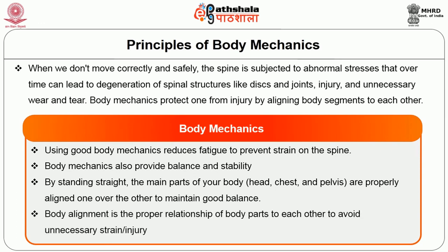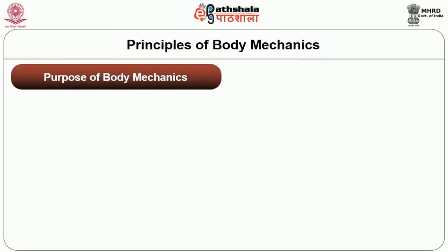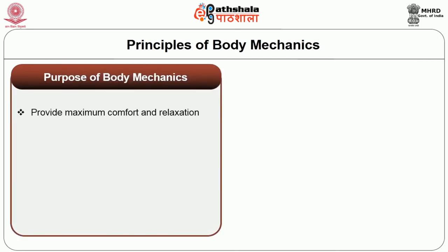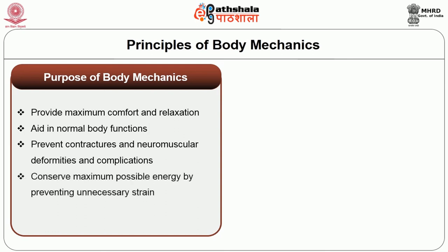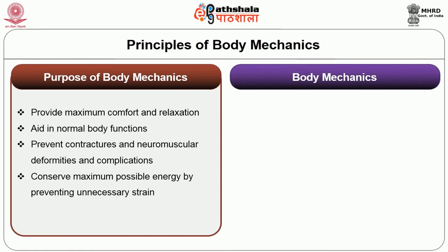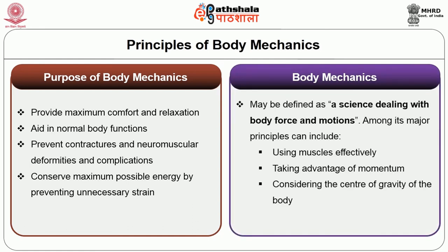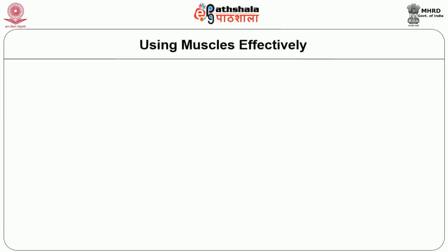Body alignment is the proper relationship of body parts to each other to avoid unnecessary strain or injury. The main purpose of body mechanics is to provide maximum comfort and relaxation, aid in normal body function, prevent neuromuscular deformities and complications, and conserve maximum possible energy by preventing unnecessary strain. Body mechanics is a science which deals with body force and motions. Major principles include using the muscles effectively, taking advantage of momentum, and considering the center of gravity of the body.